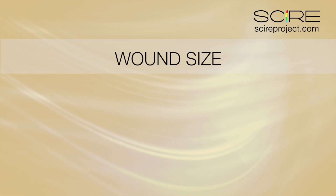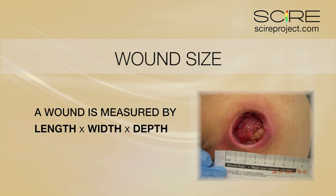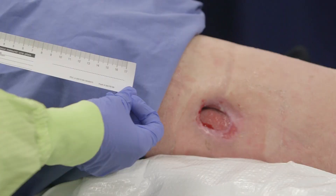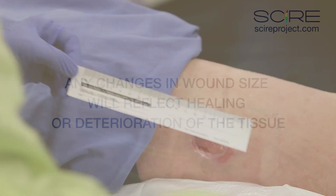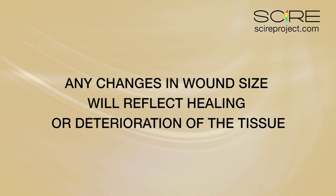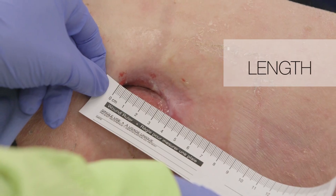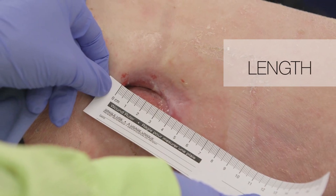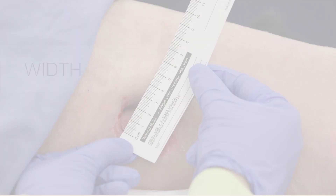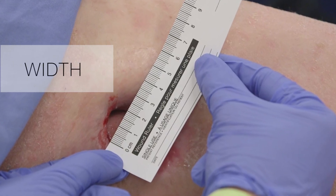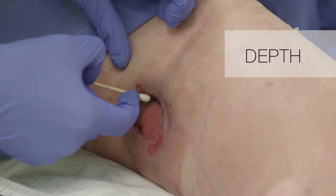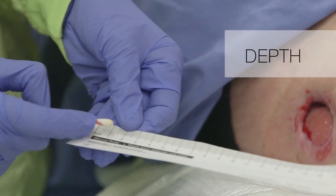The wound size is measured by length, width, and depth in centimeters. A consistent measuring approach is important to accurately monitor wound size over time. Any changes in wound size will reflect healing or deterioration of the tissue. The longest part of the wound is the length, regardless of the direction. Width is the widest aspect of the wound that is 90 degrees to the length. Depth is the maximum depth assessed in the entire wound bed.